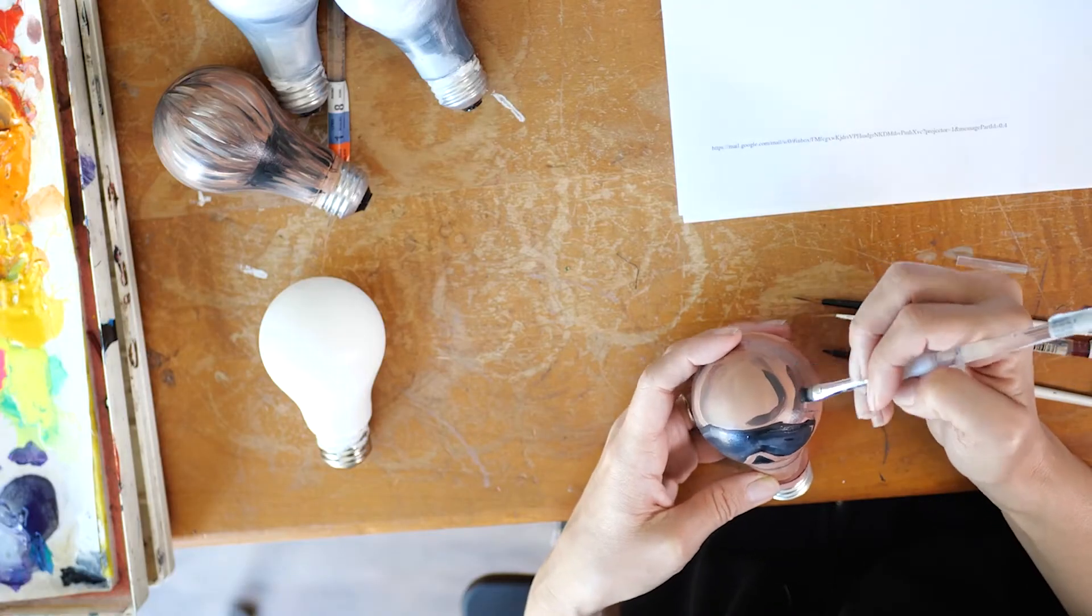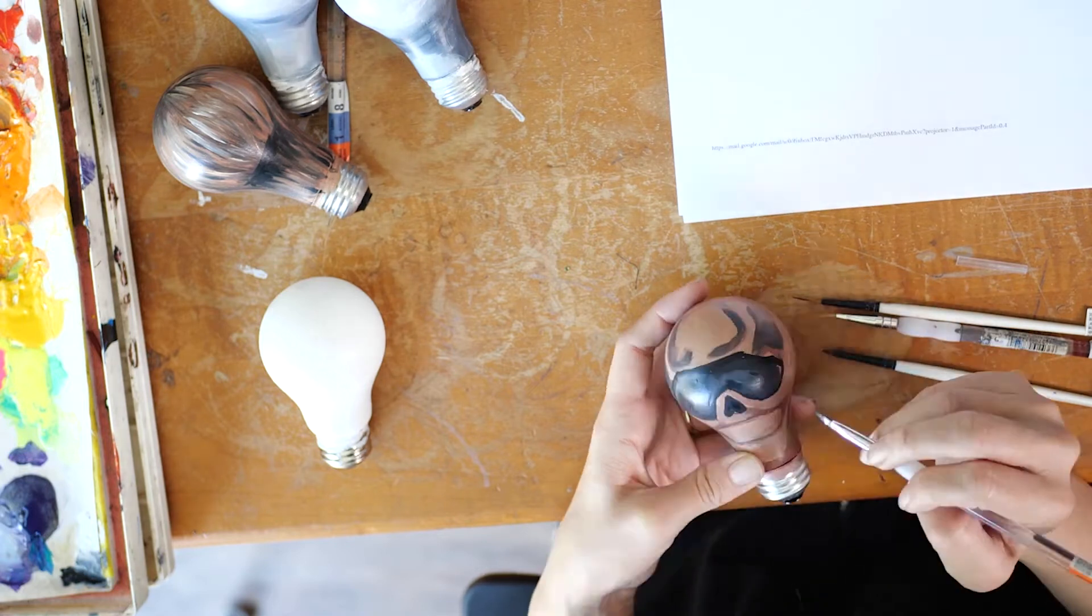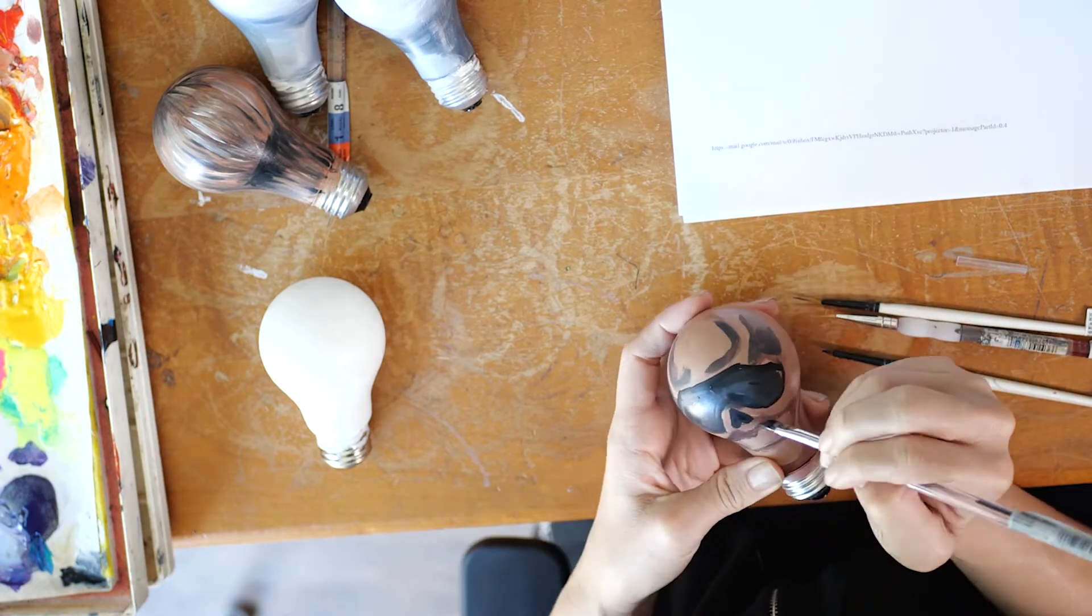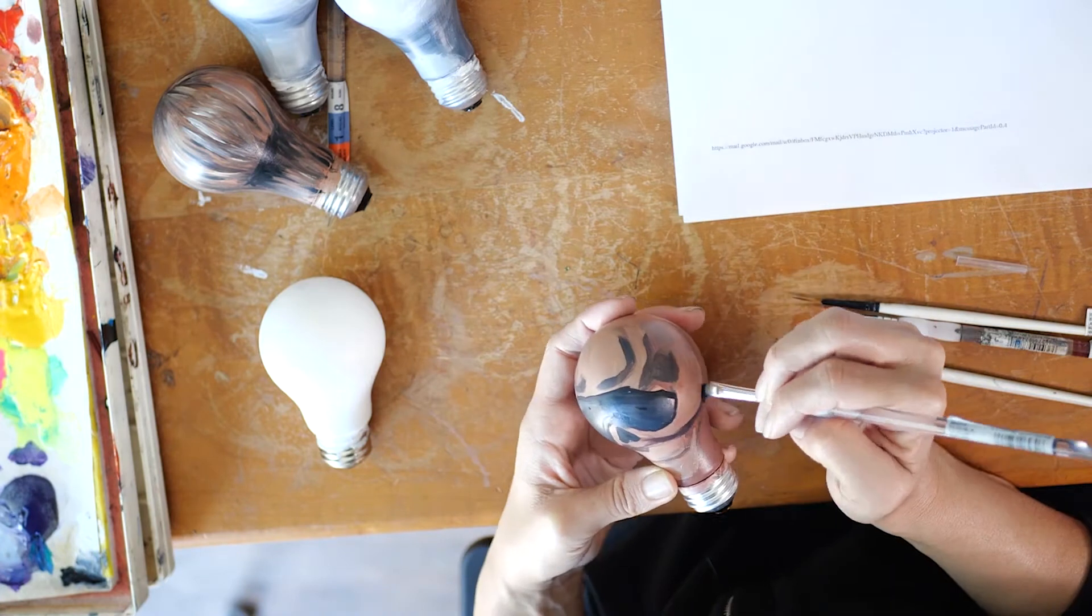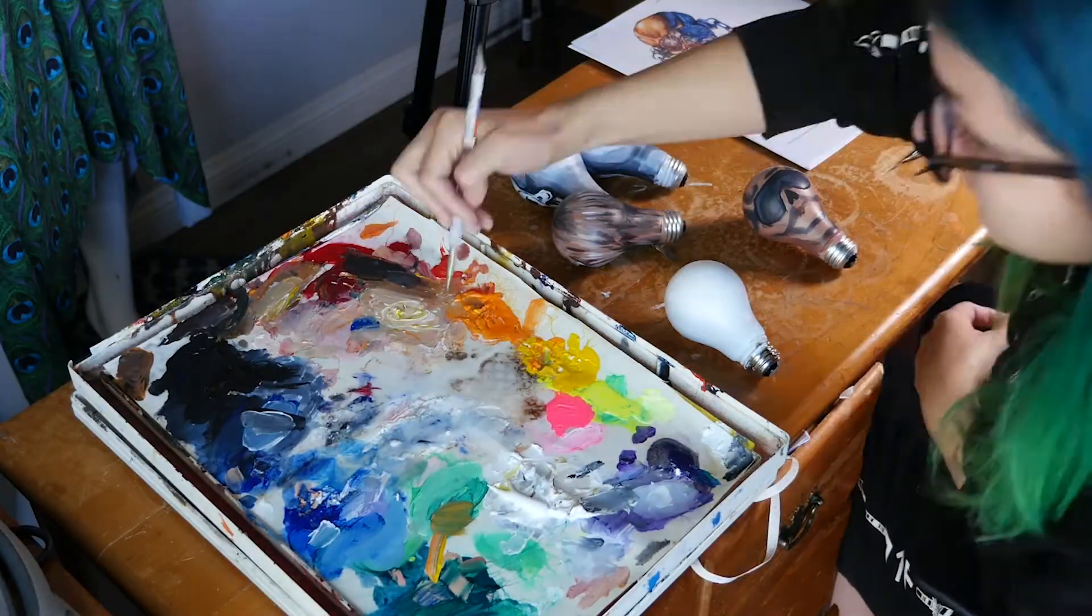And now I'm taking some of those shapes that I've laid down on the top of the skull, that little kind of half circle shape, and blending that in. I'm also doing the same with the bottom jaw and the top jaw.